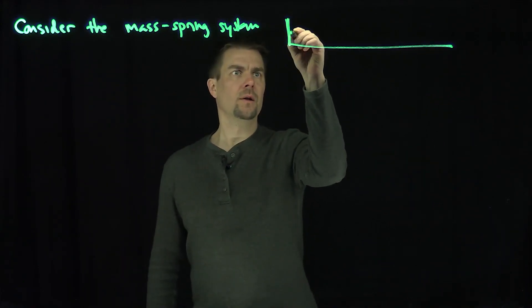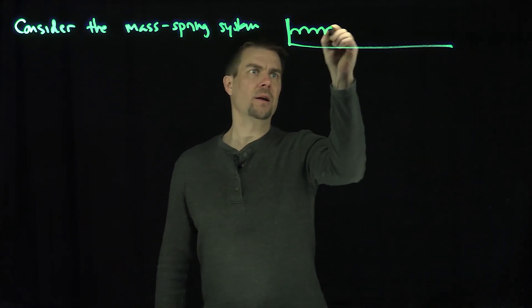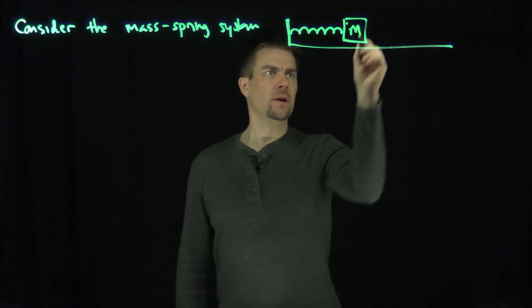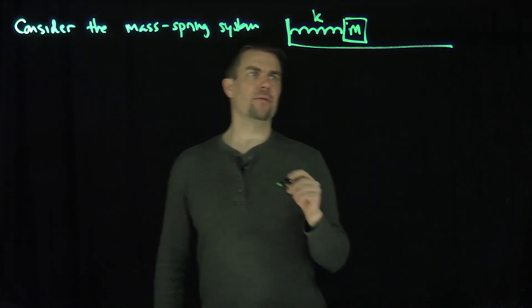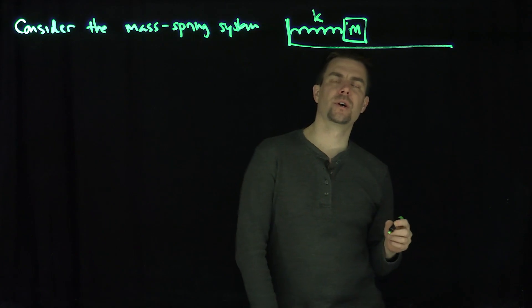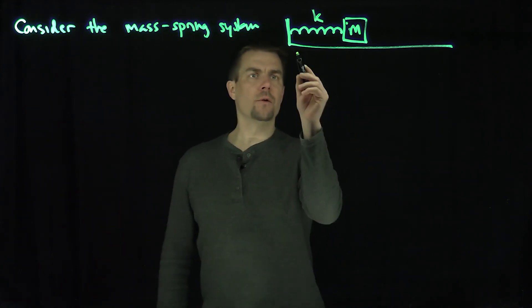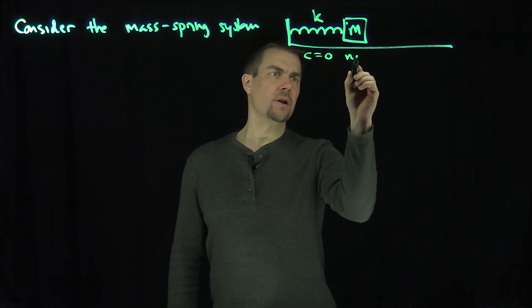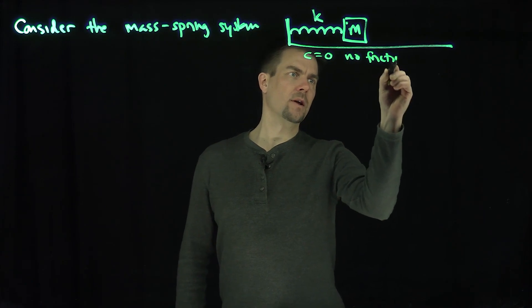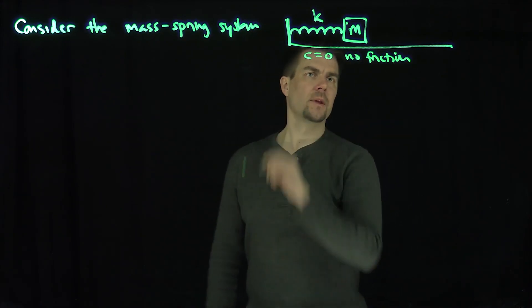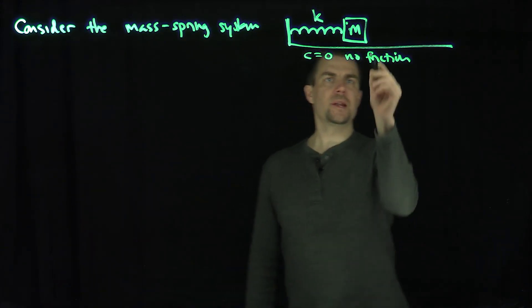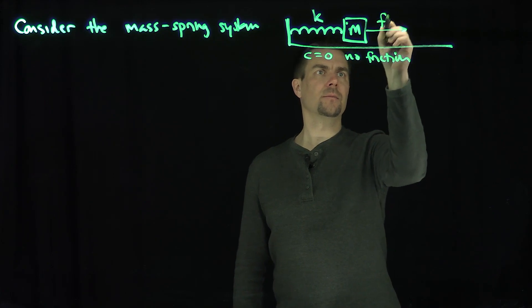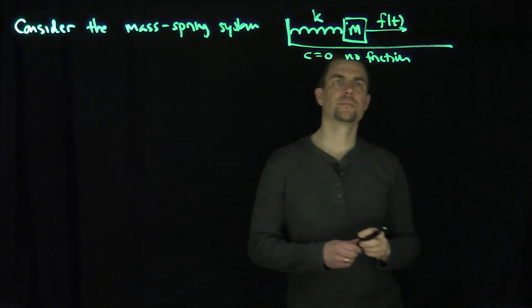Here's a wall, there's a spring. At the end of the spring, there is a mass. There's a k for the spring constant, and there's going to be no friction — I'm going to set c to be zero. And there's going to be an external force acting on this spring, f of t.